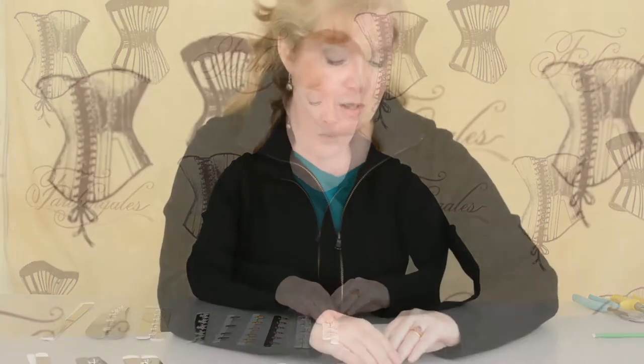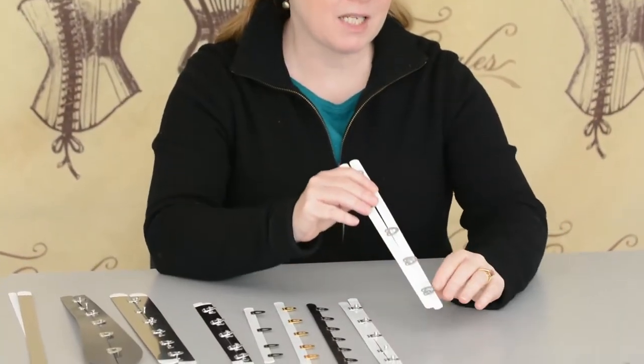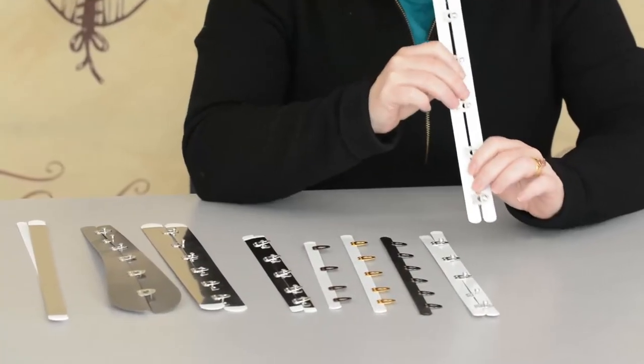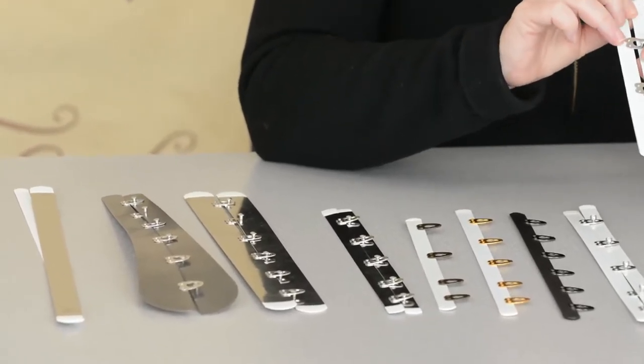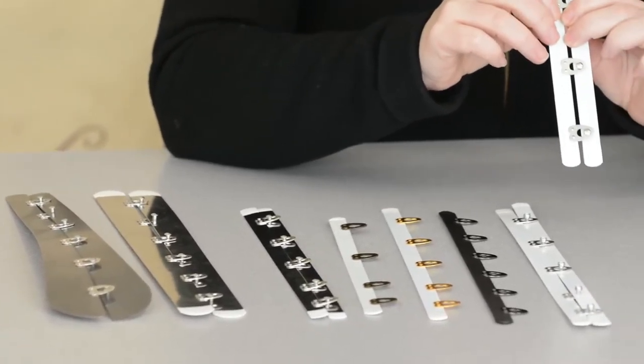Let's get started with busks. Busks were invented and developed in the 1830s and enable you to get into and out of your corset alone without help. They go in the front of the corset, and they're basically a clasp.